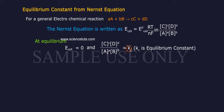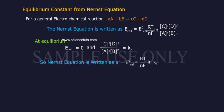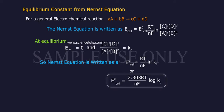Kc is equilibrium constant. So, Nernst Equation is written as E-naught cell equals RT by NF into Ln Kc. Or, E-naught cell equals 2.303 RT by NF log Kc.